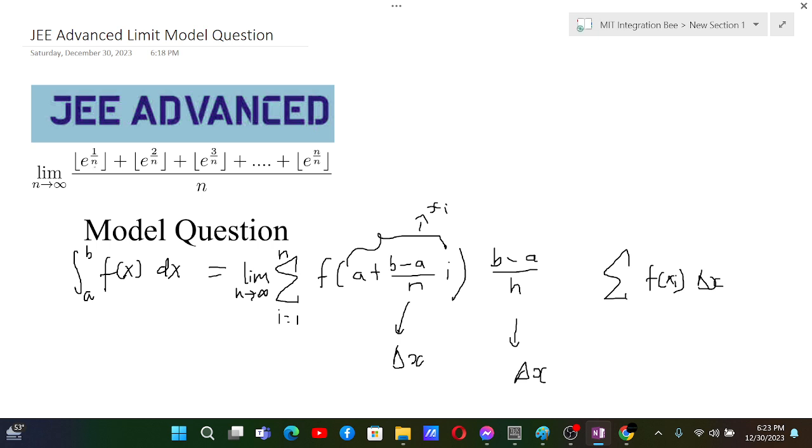And now over here, if let's say f(x) is GIF of e to the power x, if f(x) is GIF of e to the power x, and then let's say b is 1 and a is 0, then these two things will be same. So b is 1 and a is 0 means 1/n, so 1/n is also here.